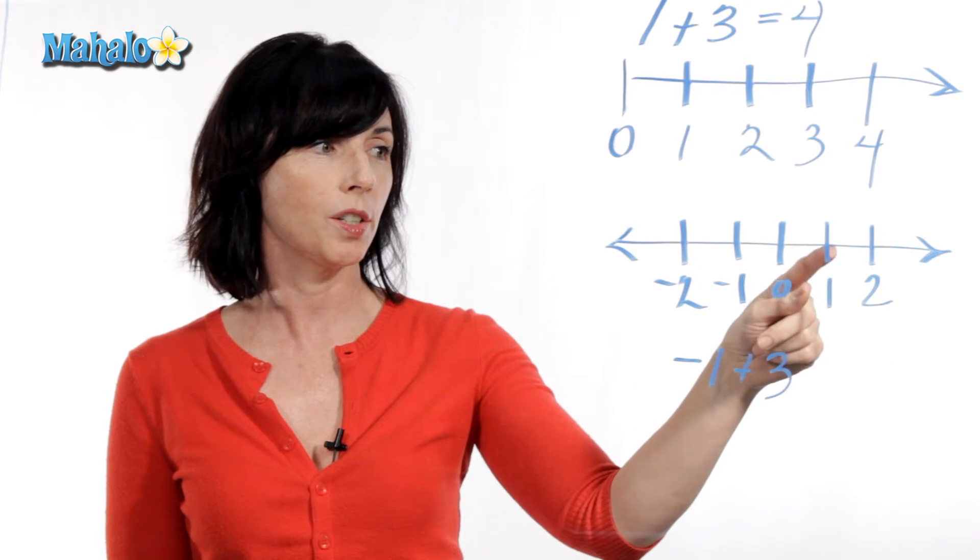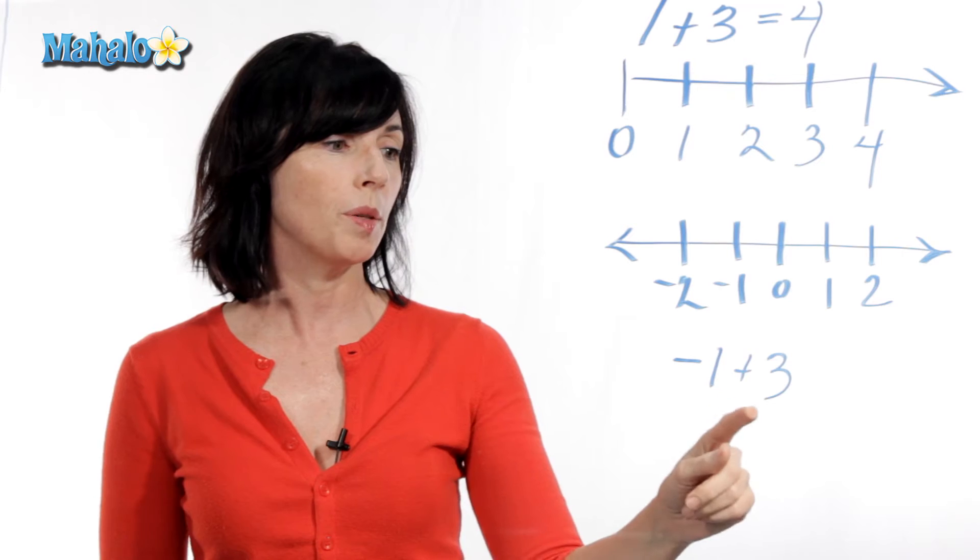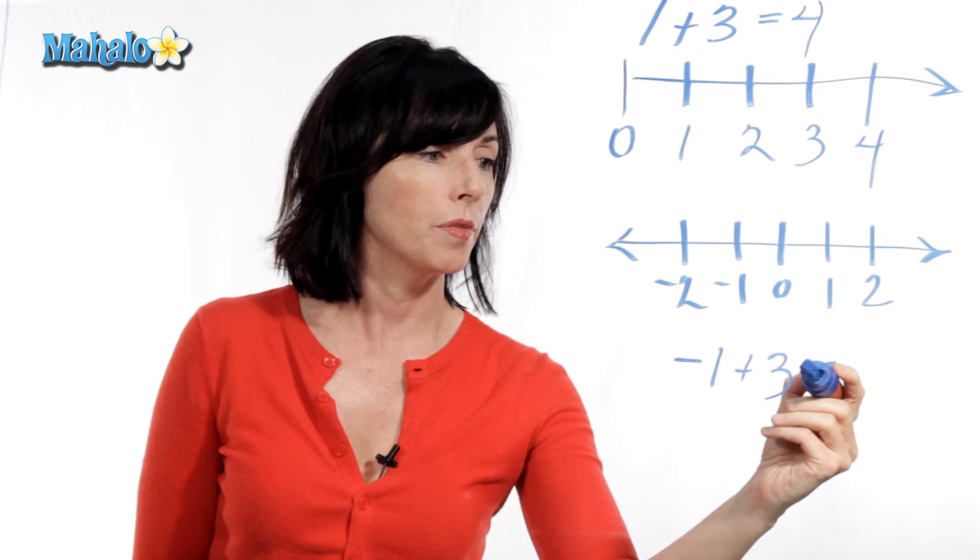So we move one, two, three. So negative one plus three is equal to two.